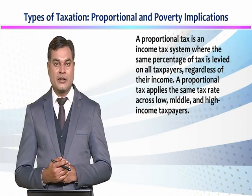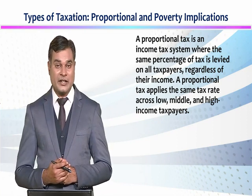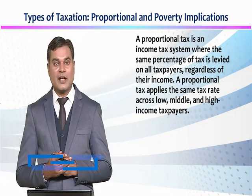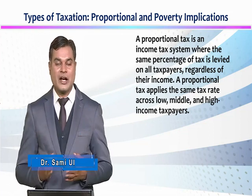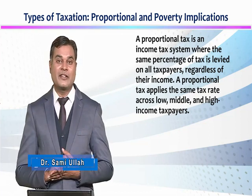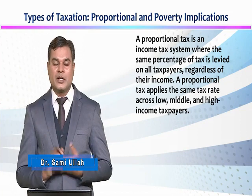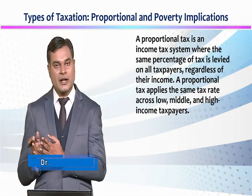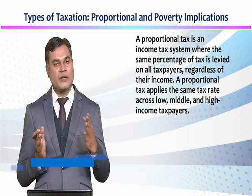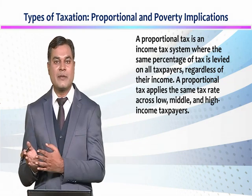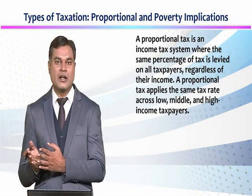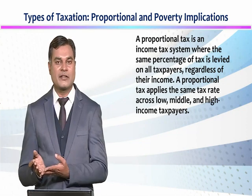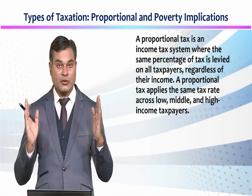In the second option, when the tax rate is proportional, then the percentage of tax remains the same. If income is 5,000, then it will be 10% tax. If income is 50,000, then it will be 10% tax. If income is 5,000,000, then it will be 10% tax. The tax rate amount does not change.